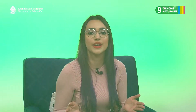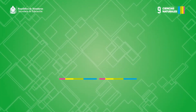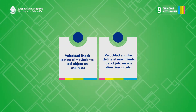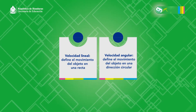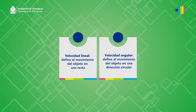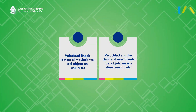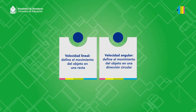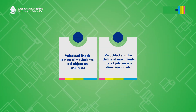Según la trayectoria que recorre un objeto, la velocidad puede ser de dos tipos: velocidad lineal, que define el movimiento del objeto en una recta, y velocidad angular, que define el movimiento del objeto en una dirección circular.